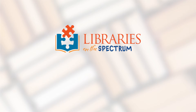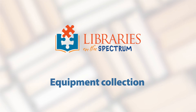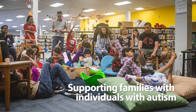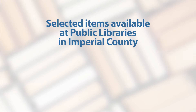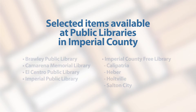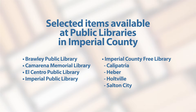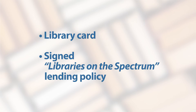The Libraries on the Spectrum equipment collection has a variety of tools to help support families with individuals with autism. Each public library system in Imperial County has selected items available for checkout. All an adult needs to take home up to two items at a time for up to 10 days are a library card and a signed Libraries on the Spectrum lending policy.